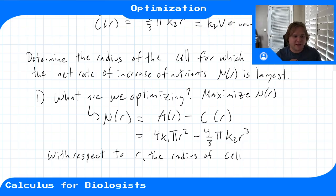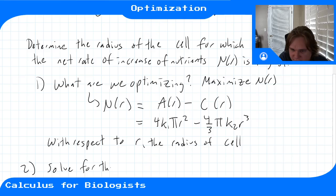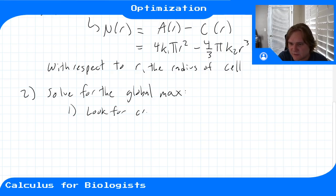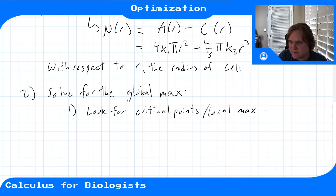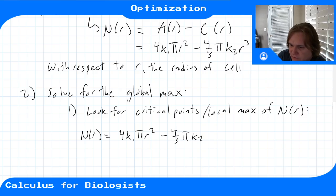We're looking for a maximum of this function, not a minimum. Step two is to solve for the global max. In solving for a global maximum, we first look for critical points to find the local max of our function N(r). So we have N(r) = 4k1πr² − (4/3)πk2r³, and a critical point is where N'(r) = 0.